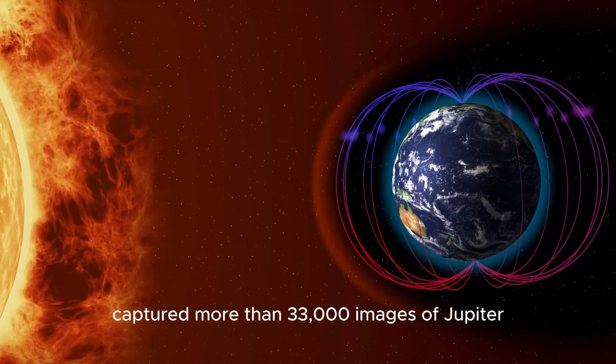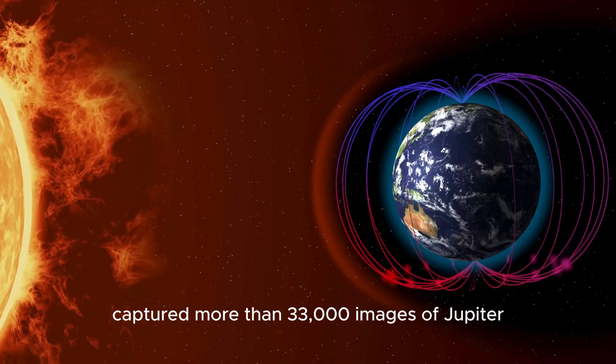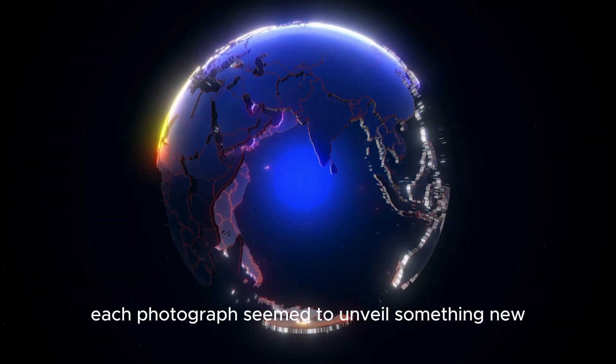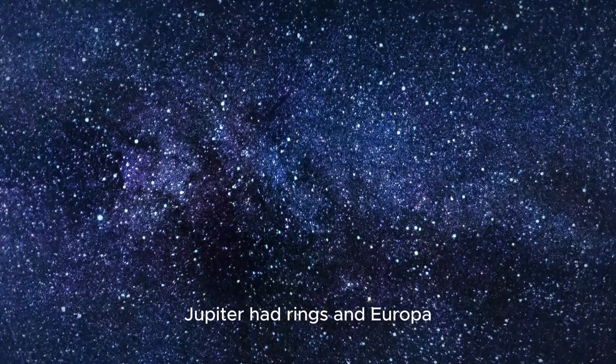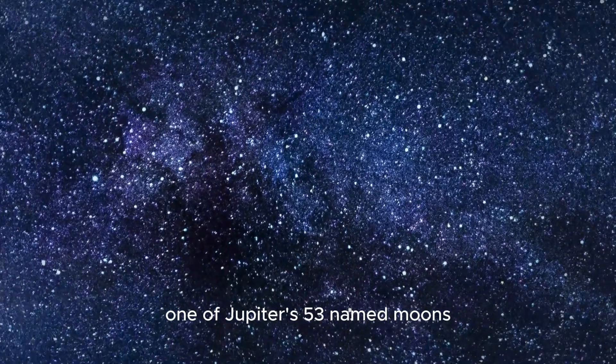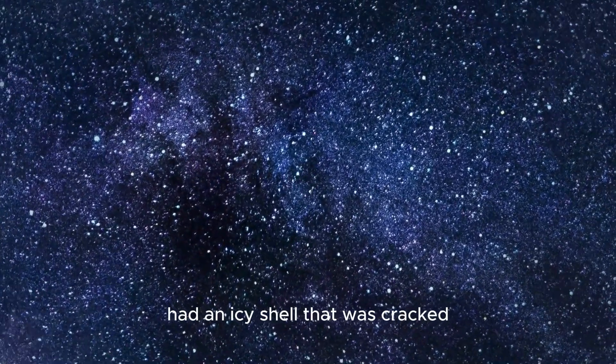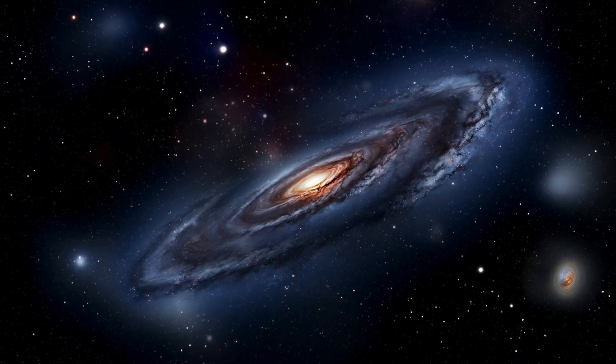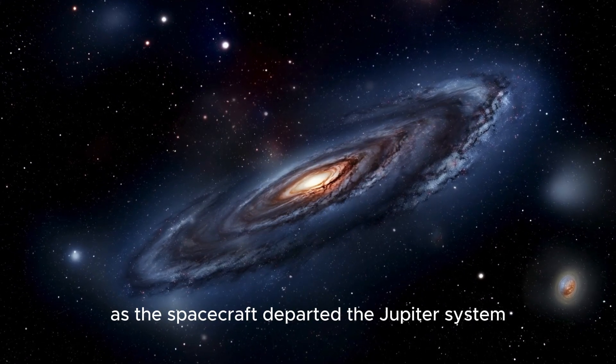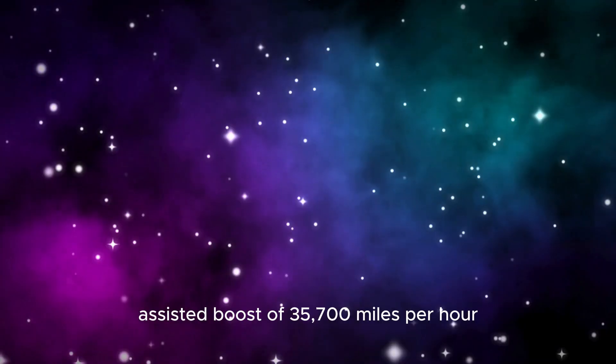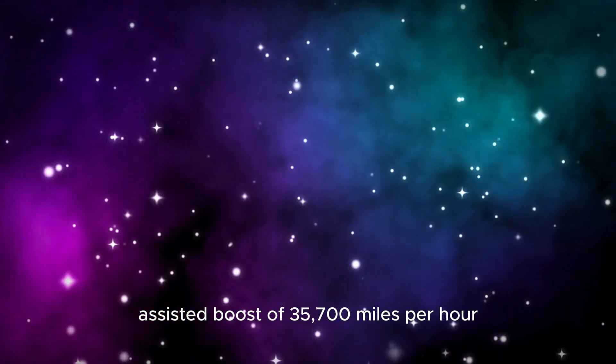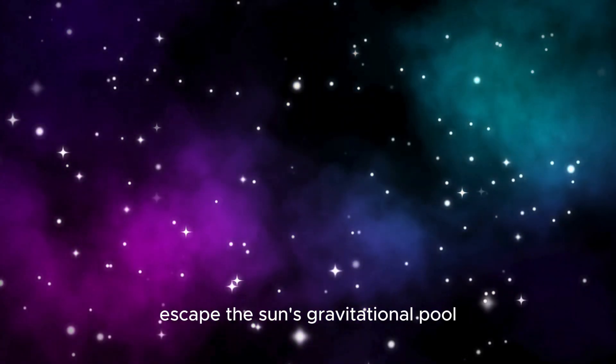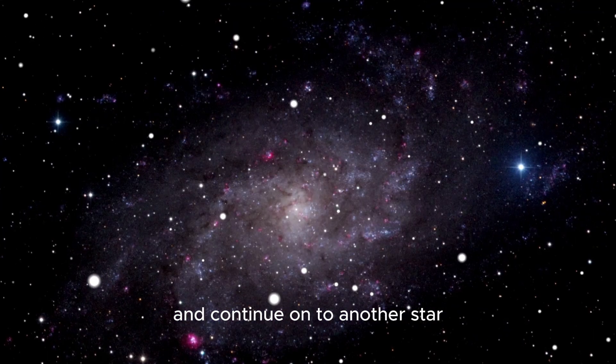The Voyager spacecraft captured more than 33,000 images of Jupiter and its satellites. Each photograph seemed to unveil something new. Jupiter had rings, and Europa, one of Jupiter's 53 named moons, had an icy shell that was cracked and is now believed to be more than 60 miles thick. As the spacecraft departed the Jupiter system, they received a gravity-assisted boost of 35,700 miles per hour. Without this, they wouldn't have been able to escape the Sun's gravitational pull and continue on to another star.